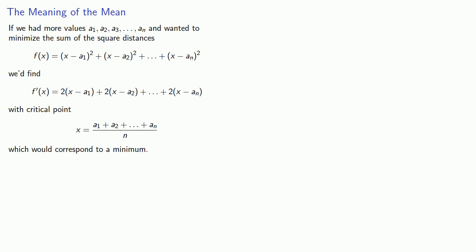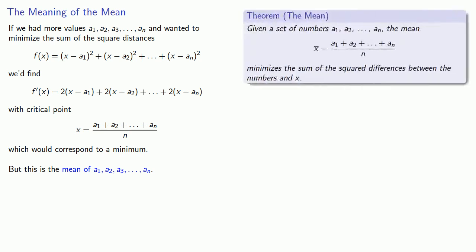At this point, you should ask yourself: where have we seen this before? It turns out this is just the mean of those numbers. This gives us an important result: given a set of numbers, the mean minimizes the sum of the squared differences.